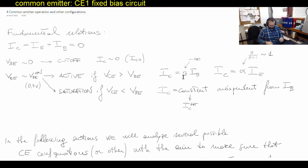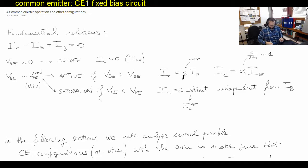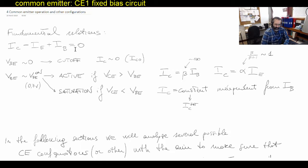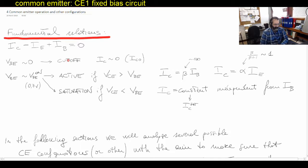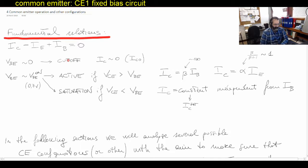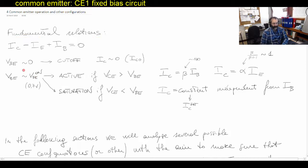Yesterday, toward the end of the lecture, we had started this section related to understanding how in practice the BJT is used in the common emitter configuration. If you remember the fundamental results we got from our qualitative analysis of the BJT transistor, they are summarized here and we went through these already.